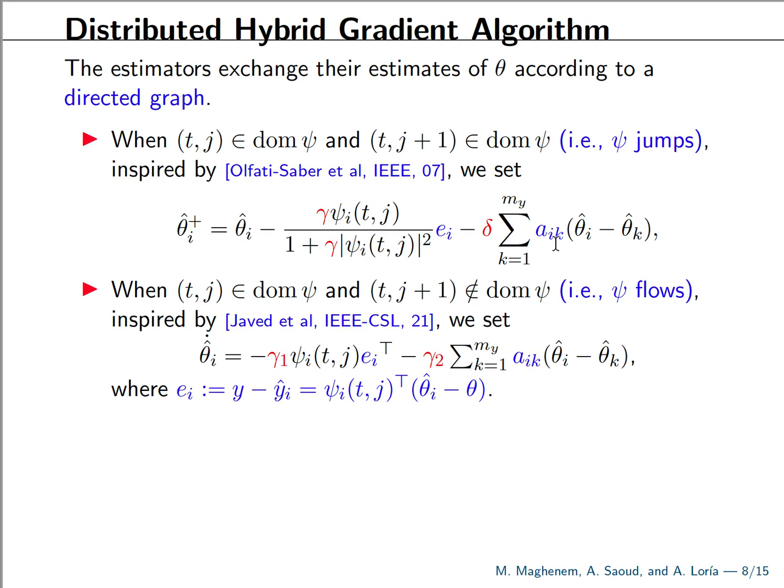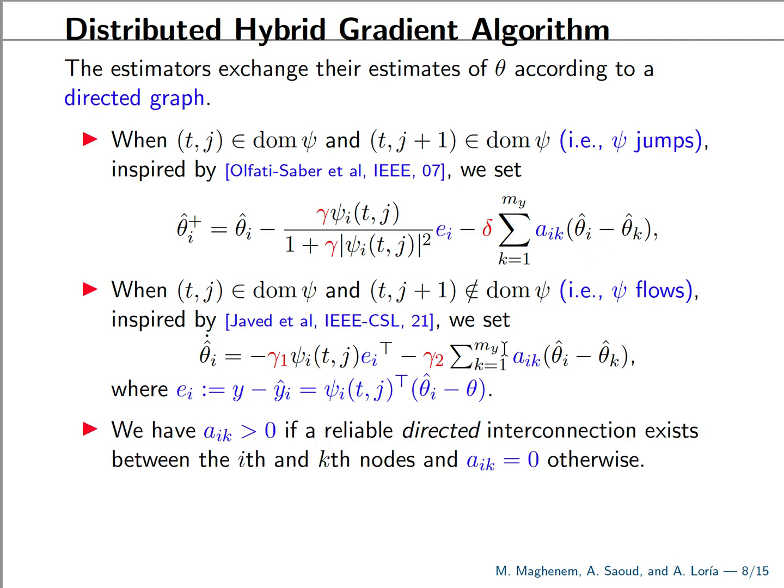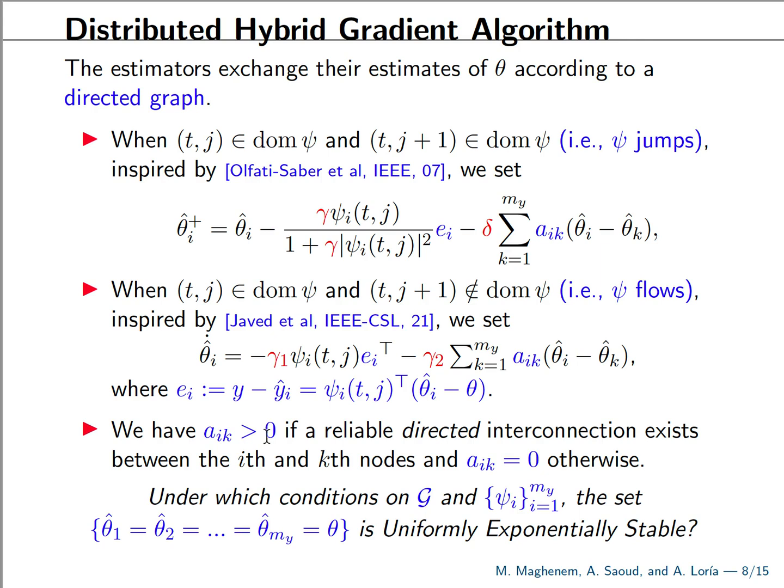We do the same thing along the flows. And here, the cooperative terms, they are coupled with this parameter a, that indicates that there is actually an interconnection between agent i and agent k. So if a is equal to zero, there is no communication. If a is bigger than zero, then there is a communication.